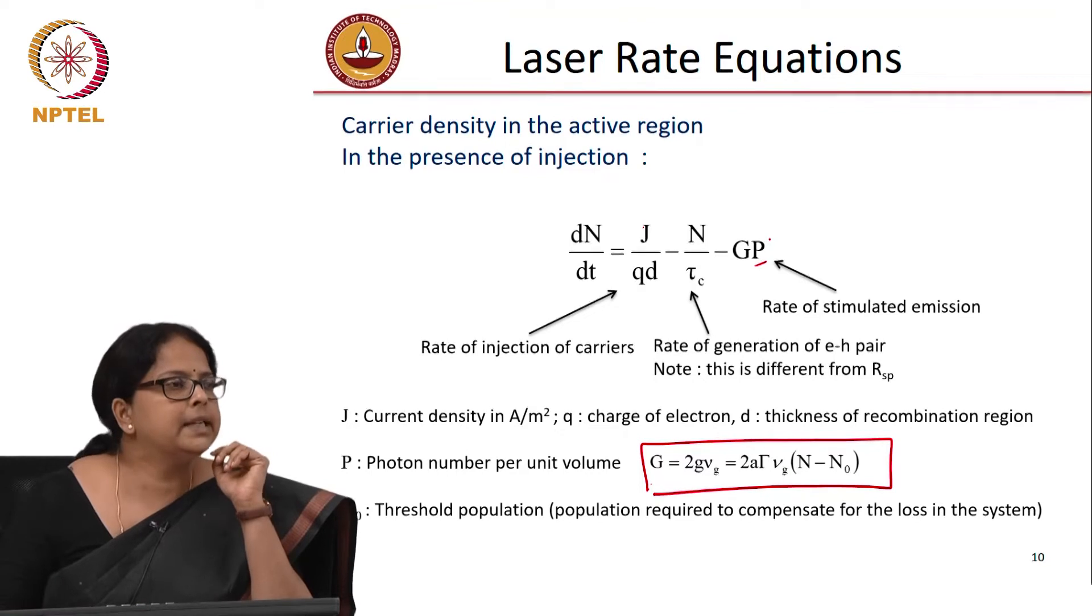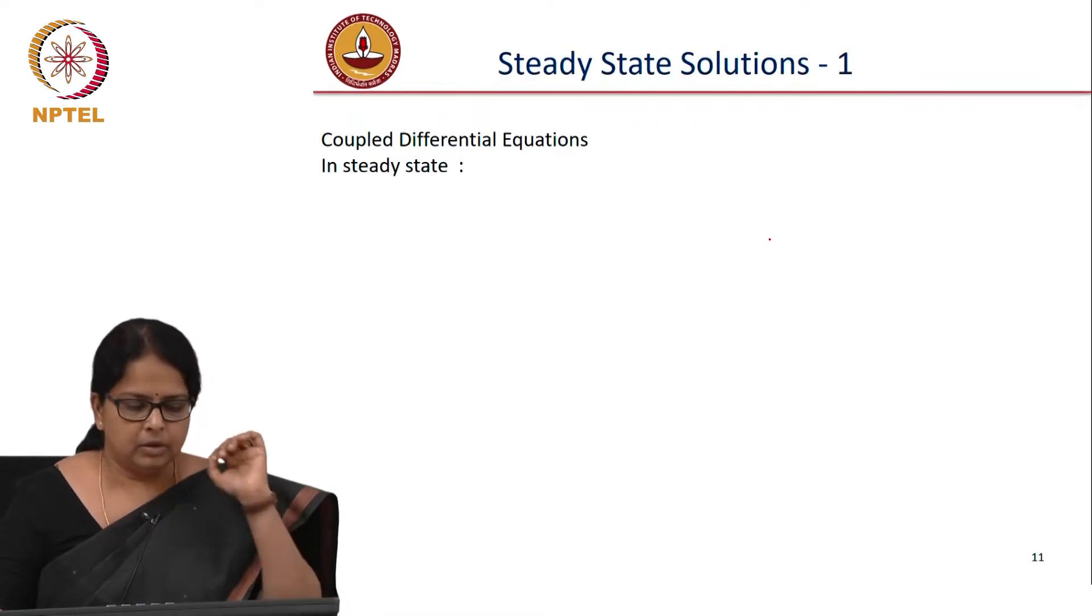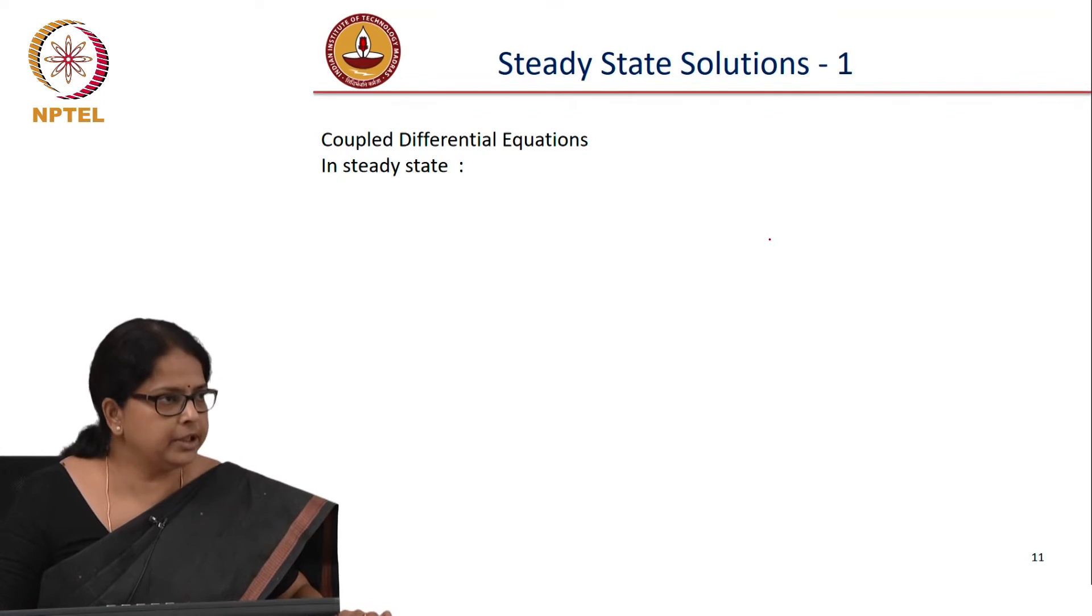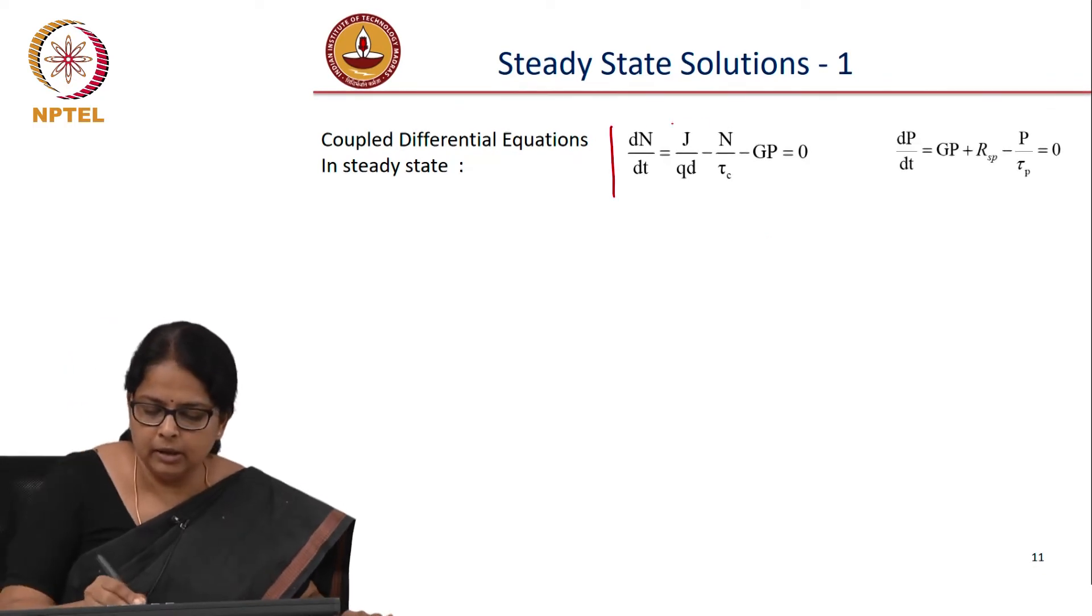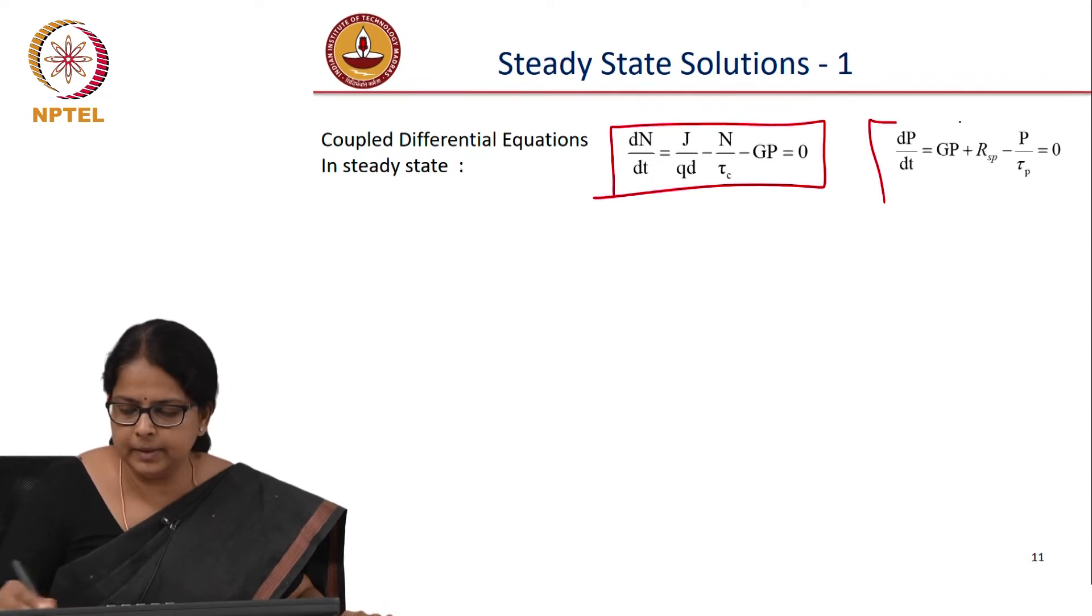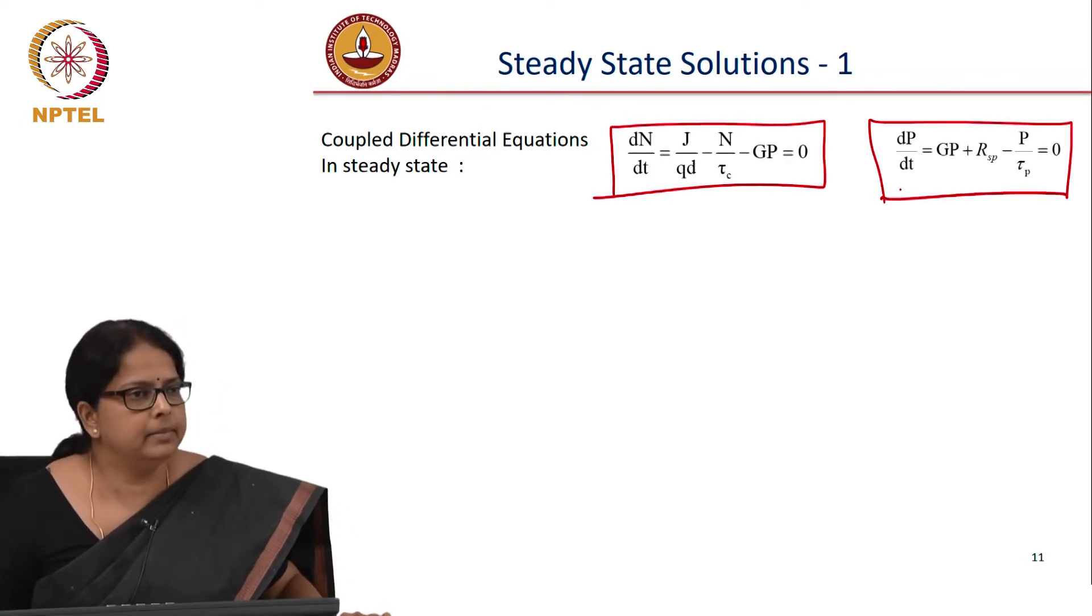Now, what happens in steady state? This should become 0. So let us look at the steady state analysis. So the coupled differential equation can you write down in steady state? The dN by dt equation should become 0, dP by dt equation. So this two coupled equations, both of them become 0.